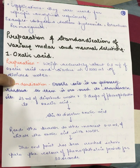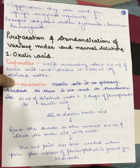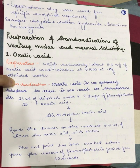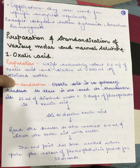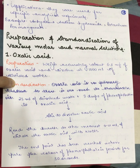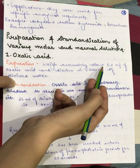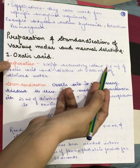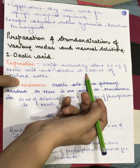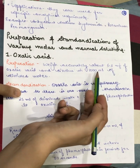Now let's see the preparation and standardization of certain solutions. First, we have oxalic acid — a 0.1 normal solution. In order to make a 0.1 N solution of oxalic acid, we will weigh 6.3 grams of oxalic acid and dissolve it in 1,000 ml of distilled water.